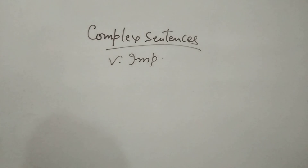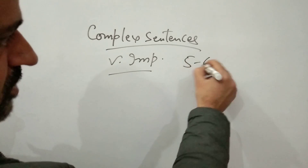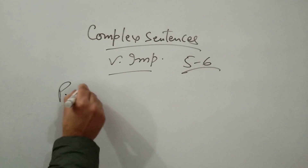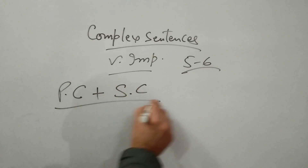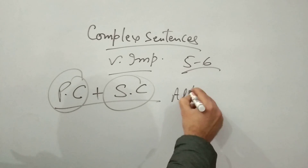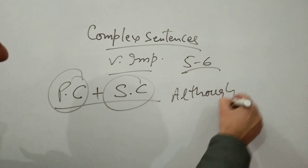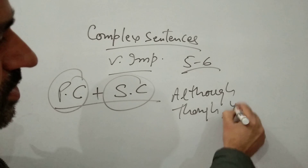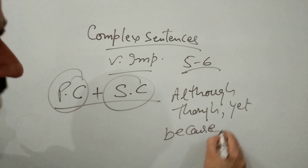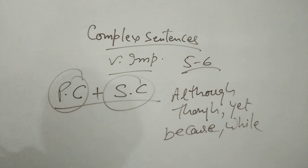Next are complex sentences, and they are really very important. You need to write five to six complex sentences if you want to get band 8. Complex sentences are those where there is one principal clause plus one subordinate clause — one independent and one dependent clause. In order to write such sentences, you need to know words like 'although,' 'though,' 'yet,' 'because,' 'while,' 'therefore,' 'so that,' etc. These are the linking words which help you write complex sentences.